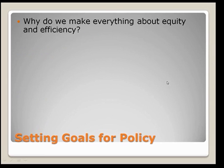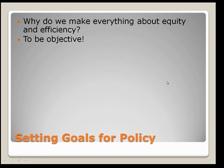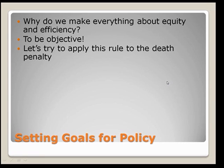You might ask why we make everything about equity and efficiency. The answer is to be objective. If I asked you what the goals of policy should be, anybody in this class could give me an answer right away — but we need some sort of objective way that's consistent across all of us. So let's try a weird example to make my point. Let's talk about the death penalty. Suppose somebody asked you whether the death penalty is fair and put you on a committee to decide. If we use our equity and efficiency rules, we can come up with a better answer than just going from our gut.